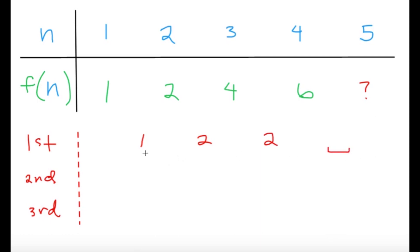So, for the second difference, we know that from 1 to 2, it's 1. From 2 to 2, that's 0. And this part, we don't know what it is, so let's just leave it blank.